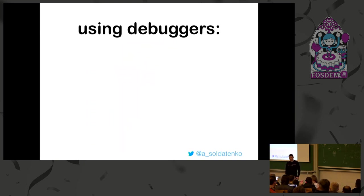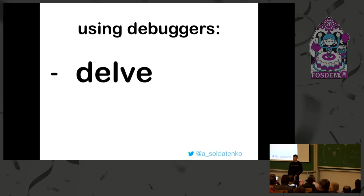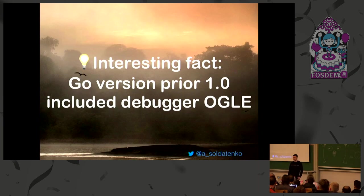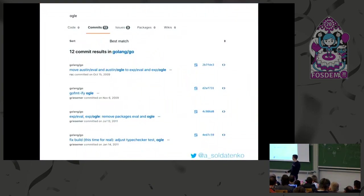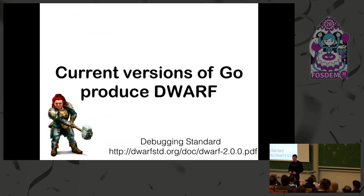Thanks - Derek had a great talk about Delve. We have Delve, and we also have old-school GDB. An interesting fact: Go versions prior to 1.0 included a debugger called ogle. You can run 'go ogle' - it runs like Google! There are a few commits you can still find in the repository that remove or replace it. Importantly, debuggers work with Go right now because of DWARF. DWARF is a format that supports source-level debugging and is language-agnostic. When we compile a Go binary, we can connect to and run it with any debugger. For production, we can disable or enable DWARF if we need more information.